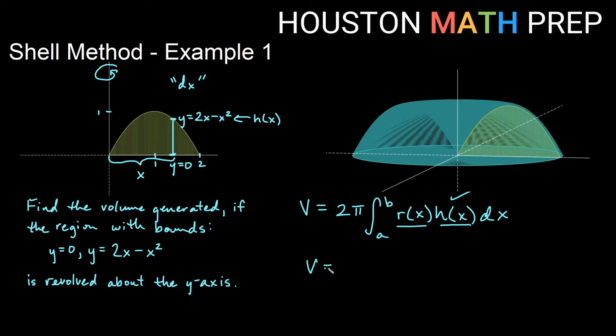We go ahead and plug in and get 2π integral. We'll do our bounds last. So the radius is x. And our height function is the 2x minus x squared. We'll integrate that dx. Let's go back and look at our bounds. So if it's dx, these are x bounds. So I simply need to go from here over to here and get all the layers in there. So this is at x equals 0. And this is at x equals 2. I went ahead and labeled it ahead of time. So my bounds are from 0 to 2.